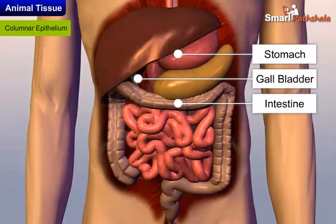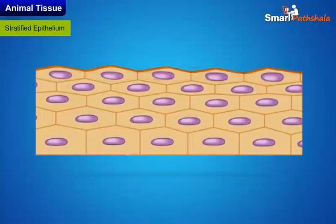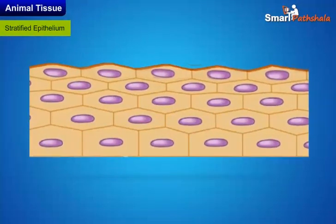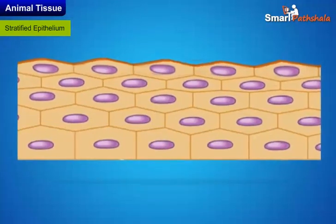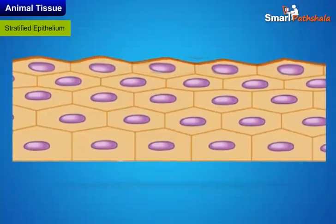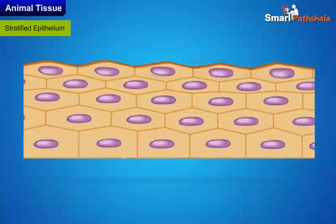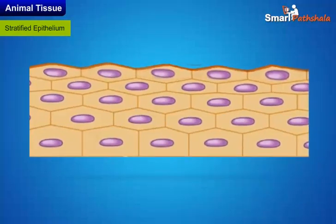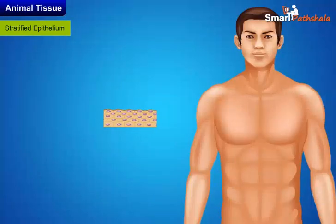Stratified epithelium has cells arranged in many layers. Stratification of layers prevents wear and tear. Skin is an example of stratified epithelium.